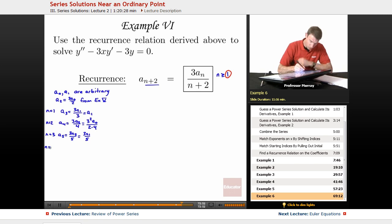n equals 4 gives A6 equals 3A4 over 6. n equals 5 gives A7 equals 3A5 over 7, which in terms of A1 is 3 squared times A1 over 3 times 5 times 7.